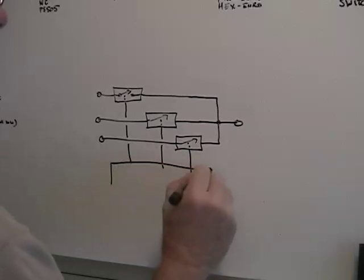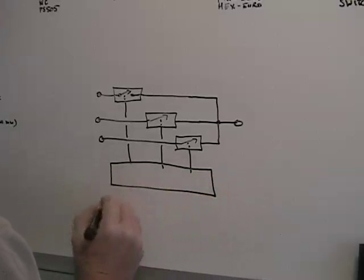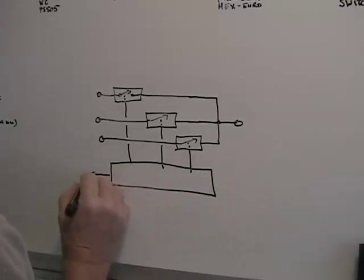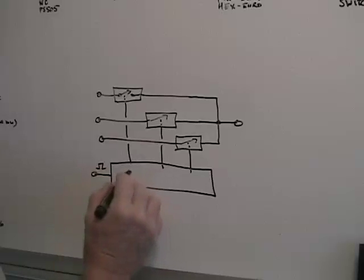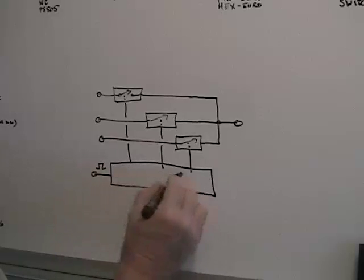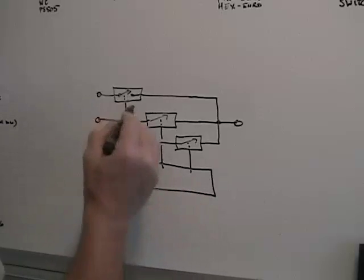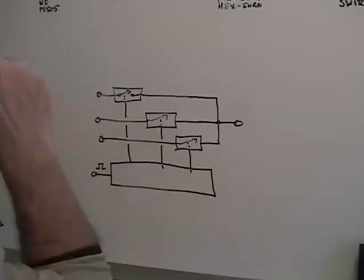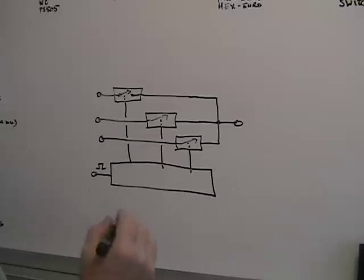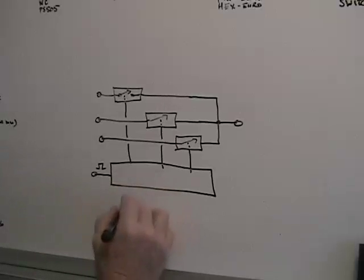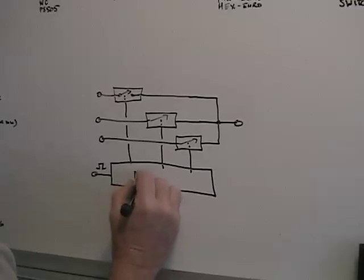In the case of the sequential switch, it's controlled by a clock pulse, and there's a little sequencer in here that turns one switch on or the other switch on in series. That's the sequential switch, or the MD-2650.